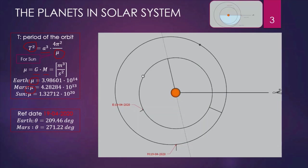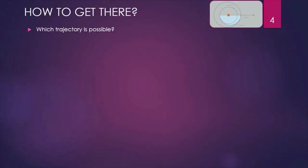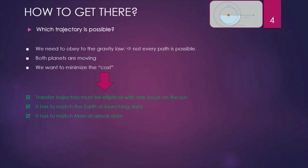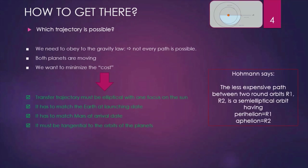Here is an animation of the motion of Mars for one year. Which trajectory is possible? We need to obey the gravity law, so not every one is feasible. Both planets are moving and we need to minimize the cost. Definitely our trajectory must be elliptical, with one focus on the Sun, because we are in the solar system. We need to match the Earth at the launching date and Mars at the arrival date. And we want to minimize the cost, so this trajectory must be tangential to the orbits of the planets, as by the Hohmann theorem.